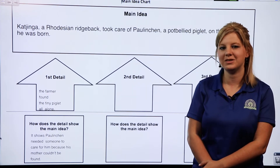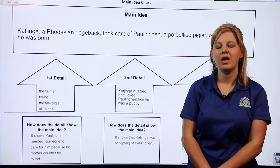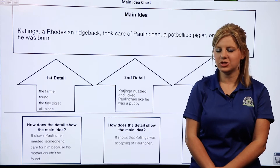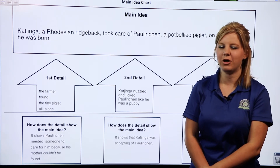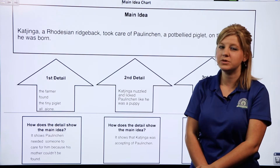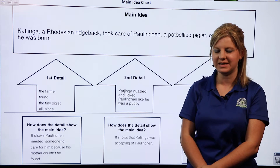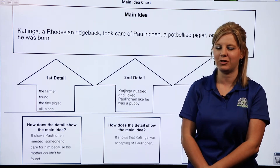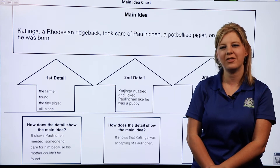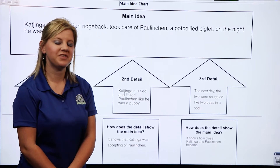Now let's think about another detail that the author includes. The author included an image that showed Kajinga nuzzling the nose of Palenchen and licking him, just like he was her own puppy. How does that detail show the main idea? Well, that shows us that Kajinga was very accepting of Palenchen.